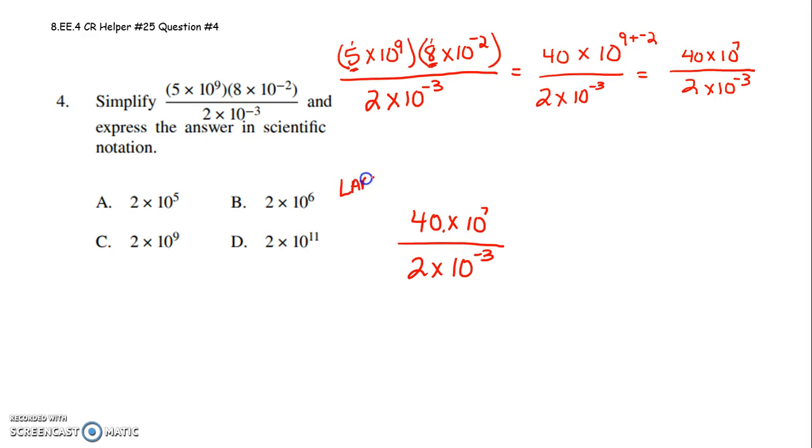I'll use my Lars. I'm going to go left. So I'll add 1 to this exponent. So 40 becomes 4.0, or 4. 40 times 10 to the 7th is 4 times 10 to the 8th, all over 2 times 10 to the negative 3.